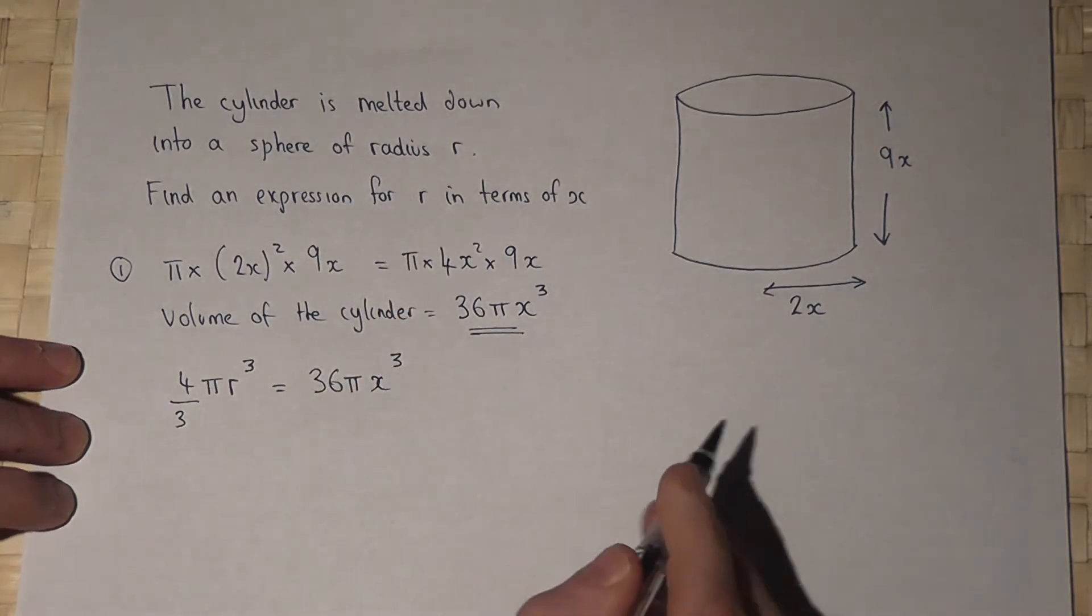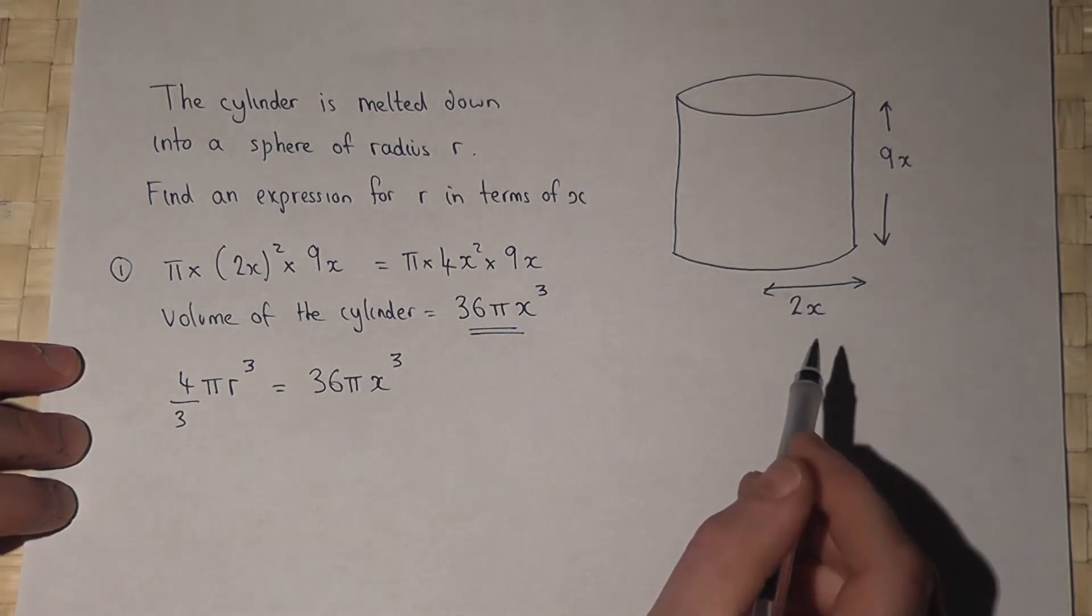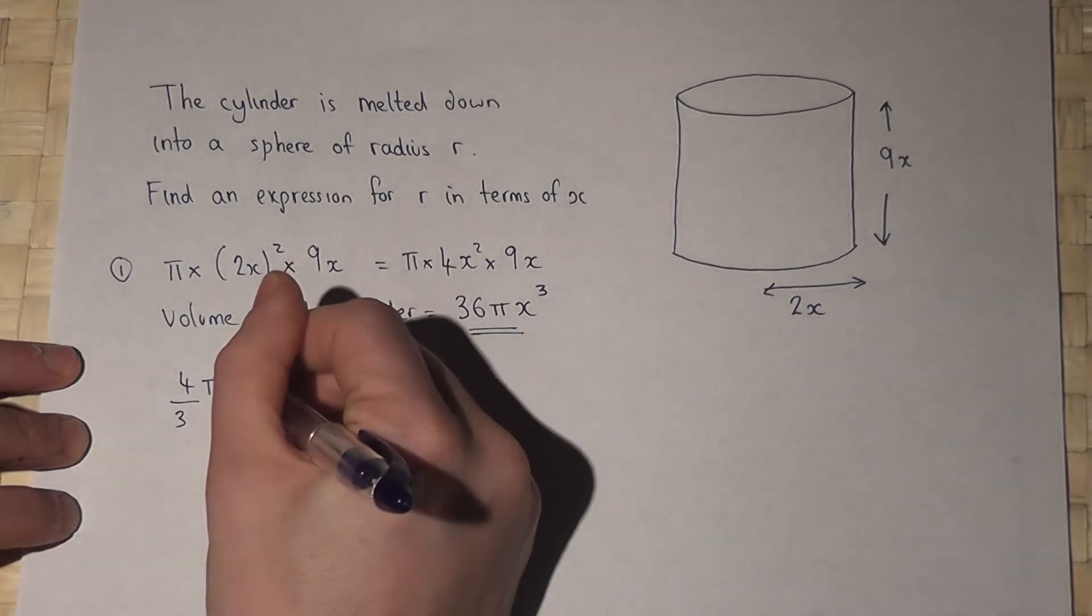So the question wants us to rearrange this to get r in terms of x. Well the first thing I observe is that there's a π on both sides so I can cancel the π.